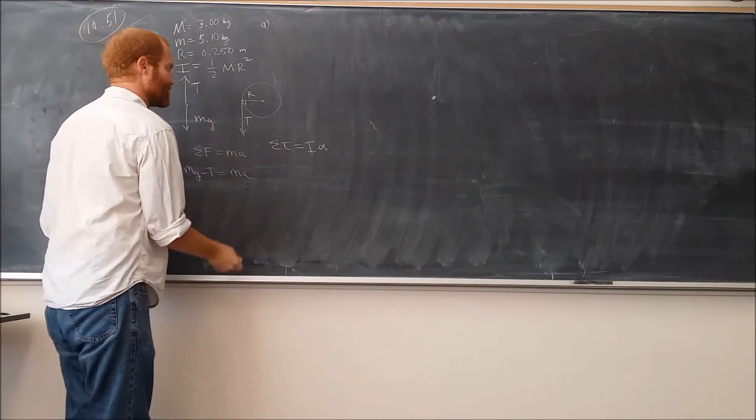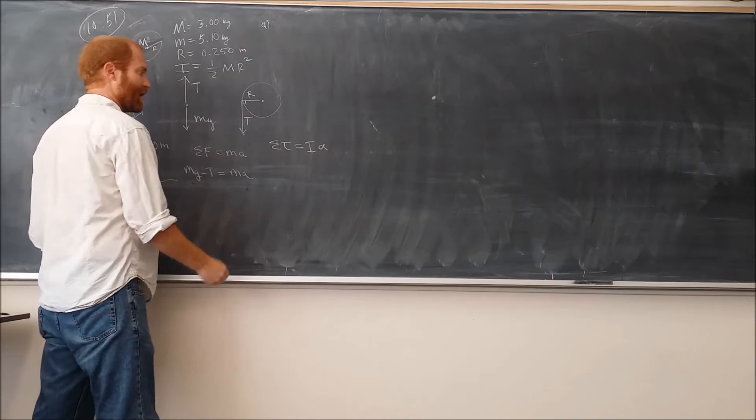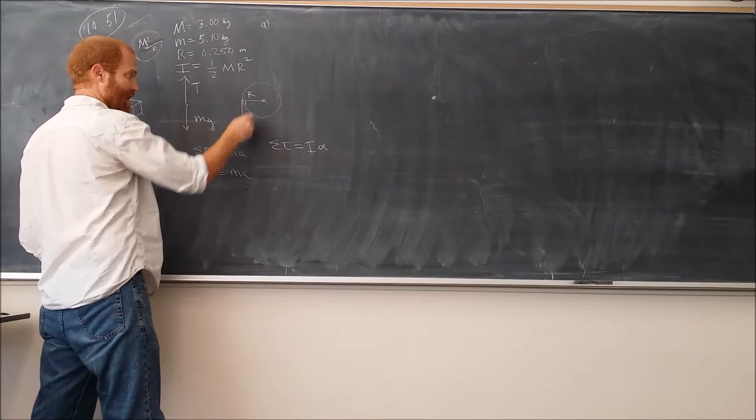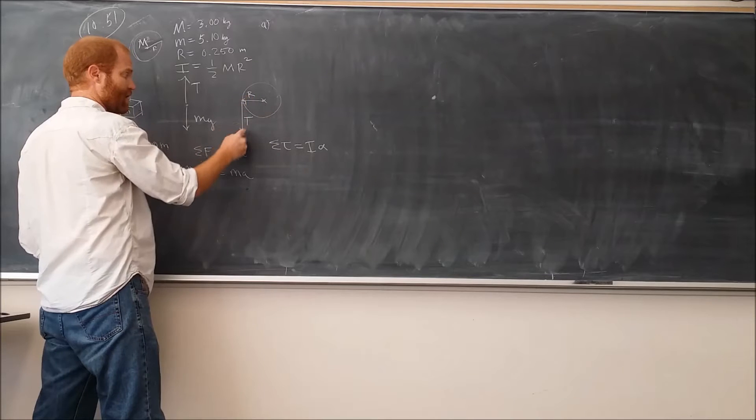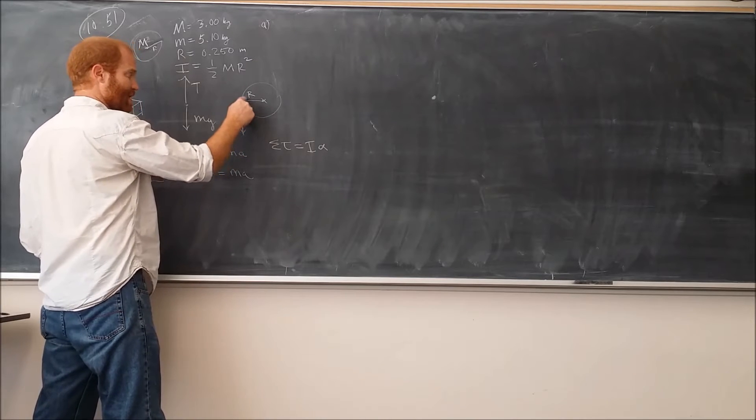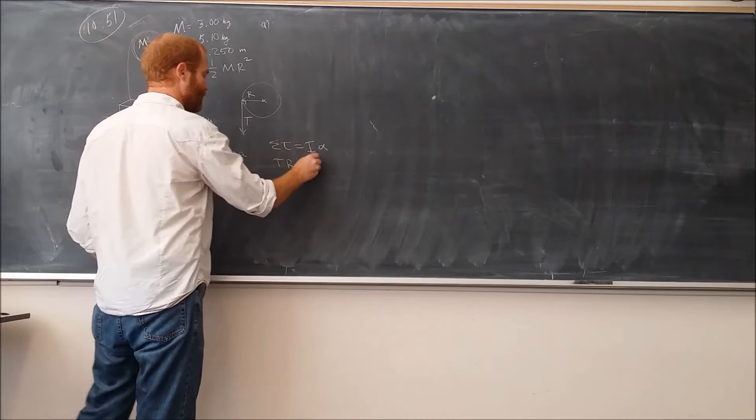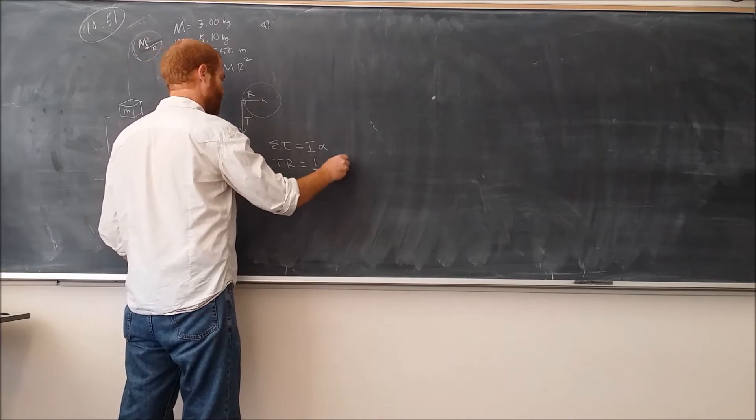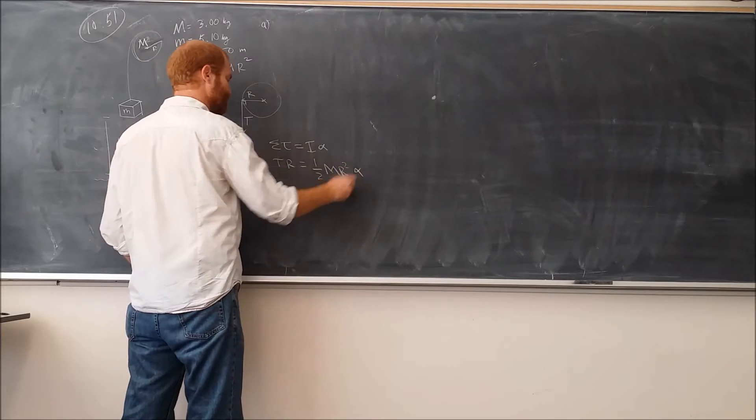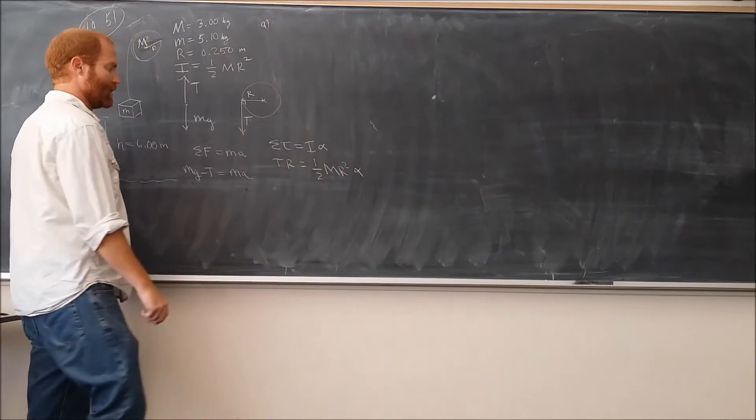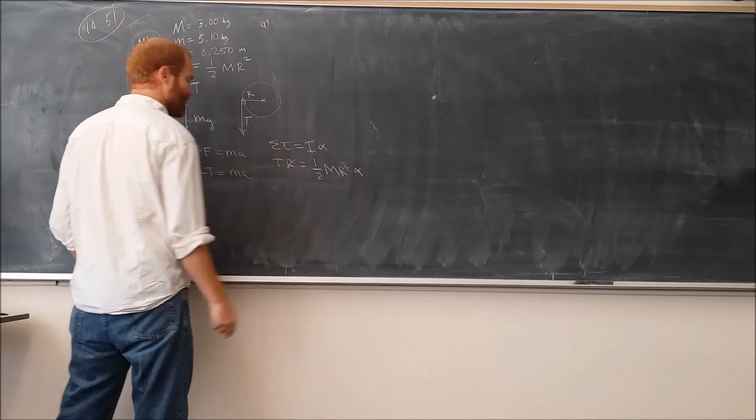So the net torque here is just the torque due to T about the axis right here, that's the axis, the distance to the axis is r. So it's T times r times the sine of the angle between the two of them, that angle is 90, so it's just T times r times alpha. The r here cancels with the r there.